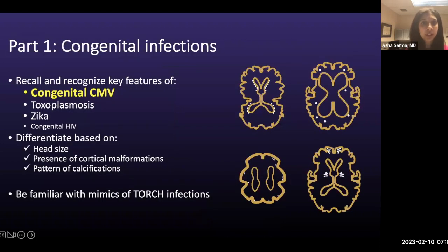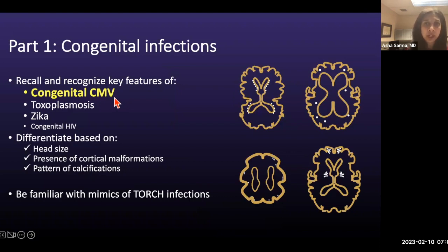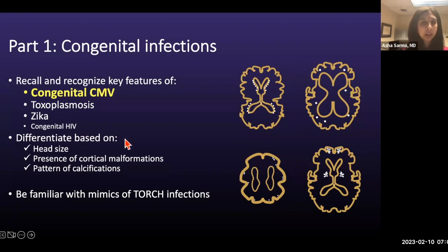For congenital infections, the goals are to recall and recognize key features of congenital CMV — highlighted in bold because it's one of the most common. I'll use CMV as a foil to compare and contrast with toxoplasmosis, Zika virus infection, and congenital HIV. We'll differentiate these entities based on head size, presence of cortical malformations, and pattern of calcifications, and then cover mimics of the TORCH infections.